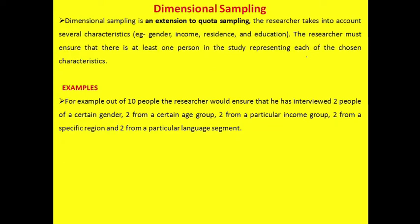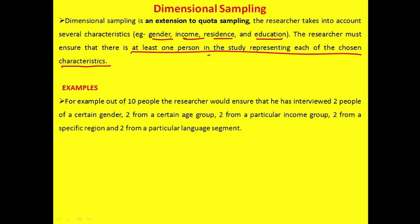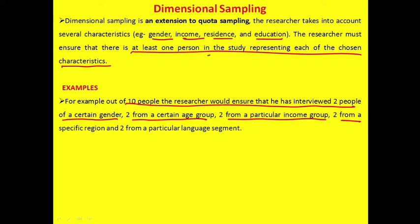Dimensional sampling is an extension of quota sampling. The researcher takes into account several characteristics such as gender, income, residence, and education, and must ensure there is at least one person in the study representing each characteristic. For example, out of 10 people interviewed, two would be from a certain gender, two from a certain age group, two from a particular income group, two from a specific region, and two from a particular language segment. This is an example of dimensional sampling.